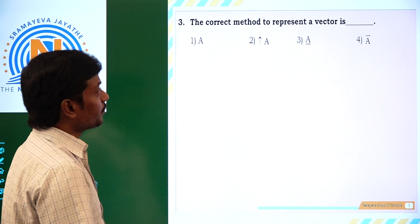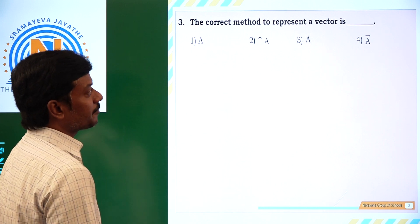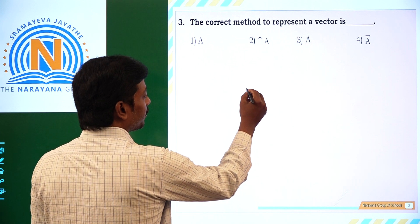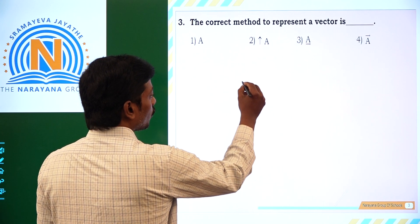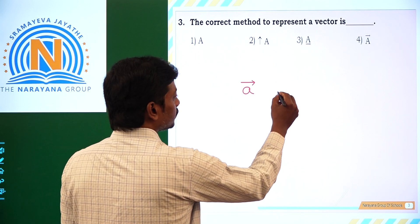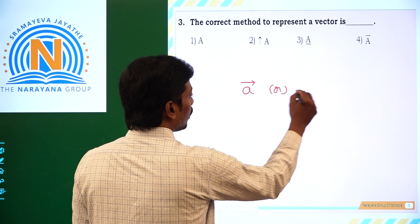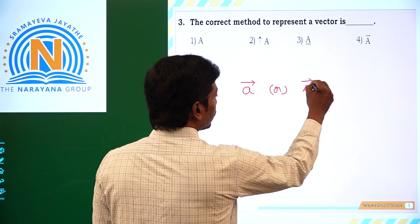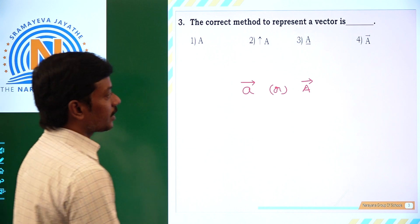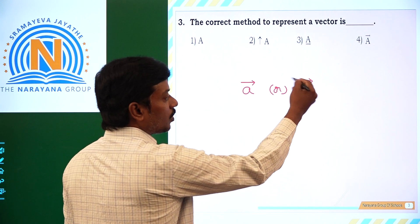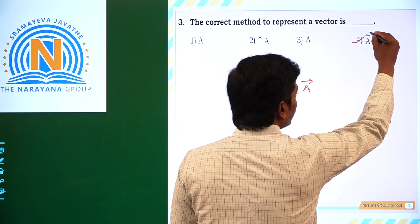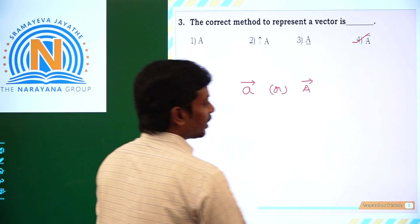The correct method to represent a vector is: a vector is always represented by an alphabet, and over it we need to write an arrowhead, whether it is a small letter or capital letter. That's why the 4th option is correct. Let's see the next question.